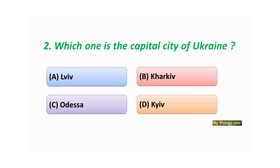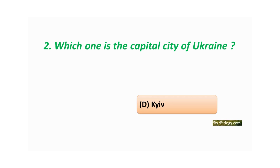Question number two: Which one is the capital city of Ukraine? Option A: Lviv. Option B: Kharkiv. Option C: Odesa. Option D: Kyiv. The correct answer is Option B: Kyiv.